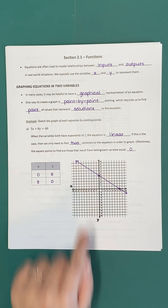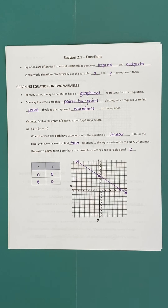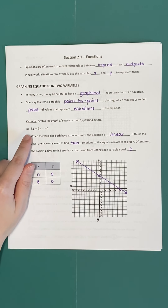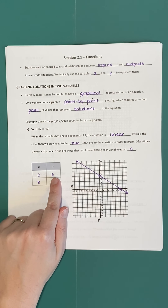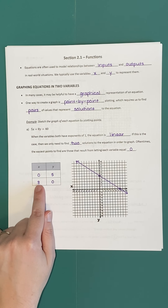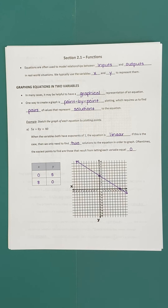Because we know this equation is linear, it's going to graph as a straight line. Once we have two points, all we have to do is connect them and that gives us the graph. Using only two points is specific to linear equations — with more complicated equations we'll typically need at least three or four ordered pairs. To review: we choose a value for x, substitute it in, and solve for y; or we choose a value for y, substitute it in, and solve for x — finding ordered pairs that make the equation true.